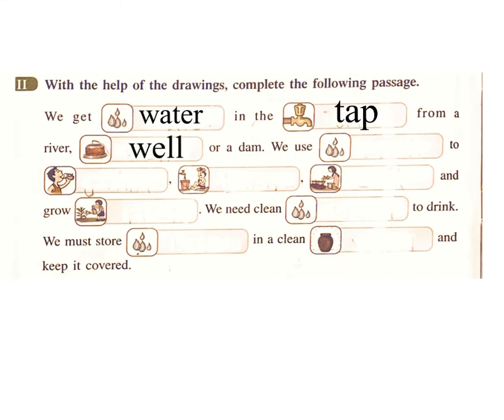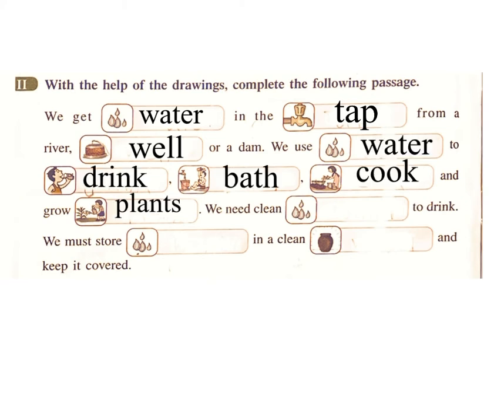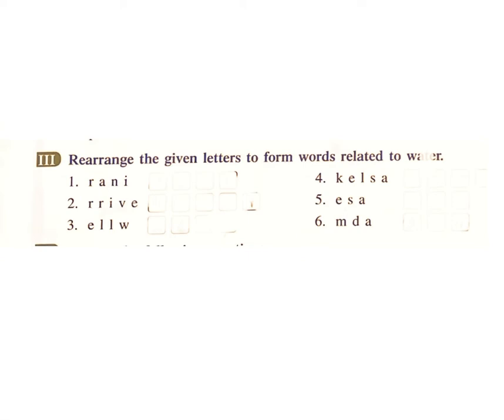Exercise 2: With the help of the drawings, complete the following passage. We get water in the tap from a river, well, or a dam. We use water to drink, bath, cook, and grow plants. We need clean water to drink. We must store water in a clean vessel and keep it covered.